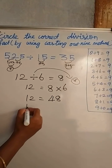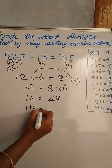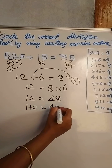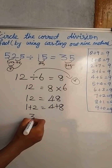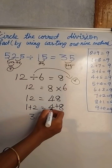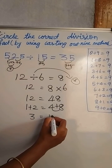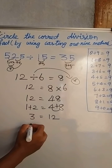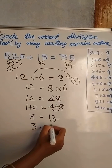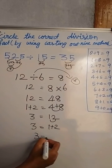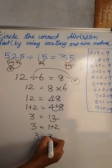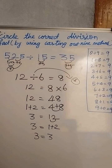Now split the digits: one plus two equals three, and four plus eight equals twelve, then one plus two equals three. Both sides give three, so three equals three. This confirms it is the correct division factor.